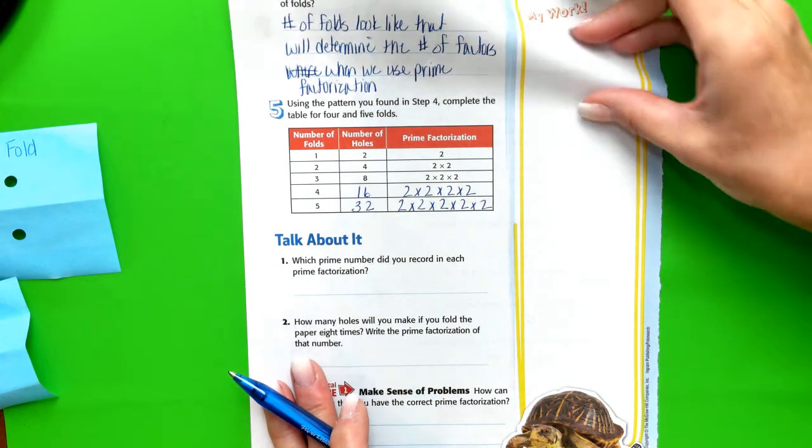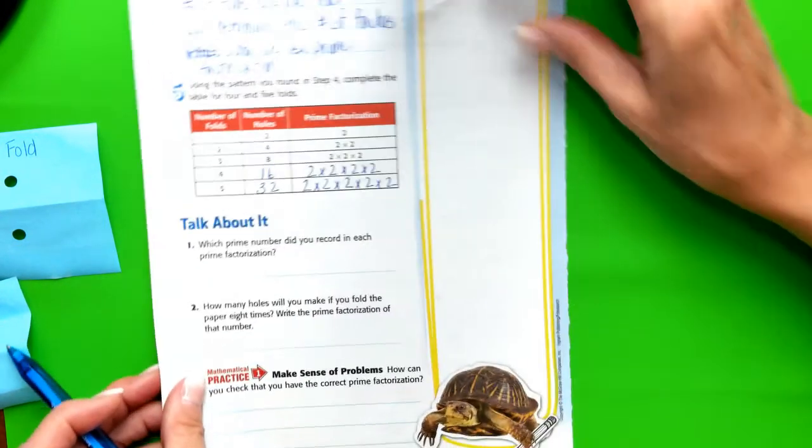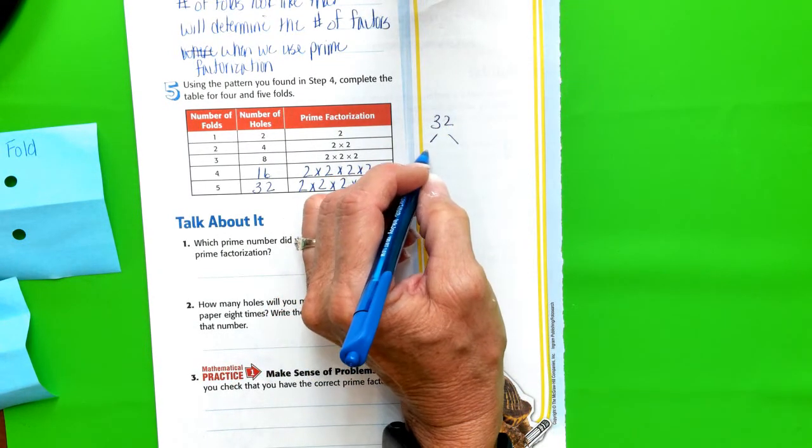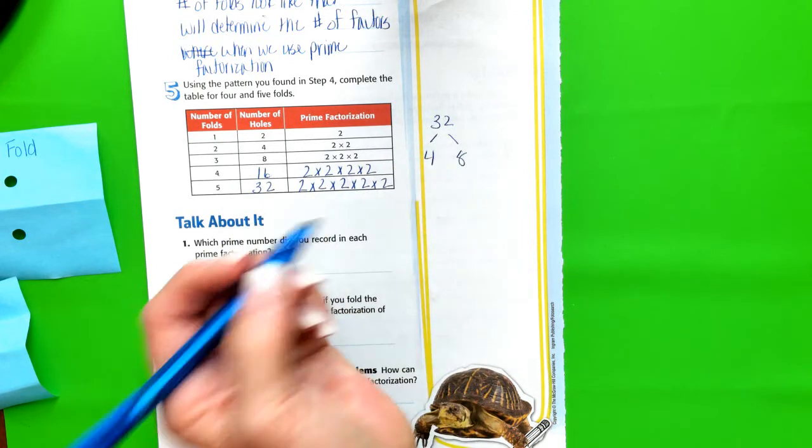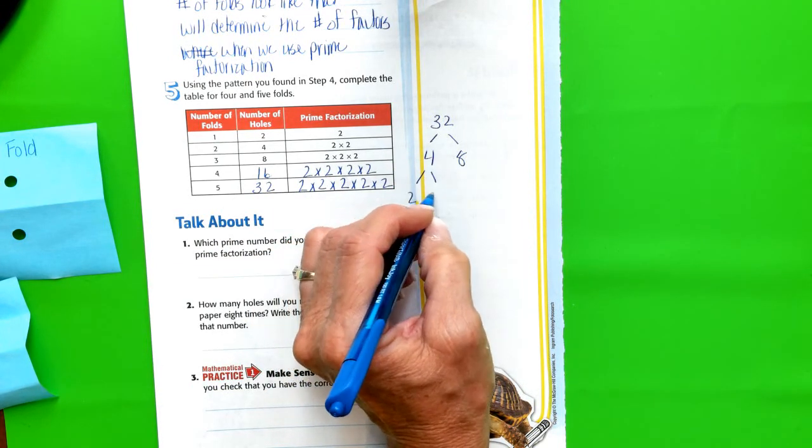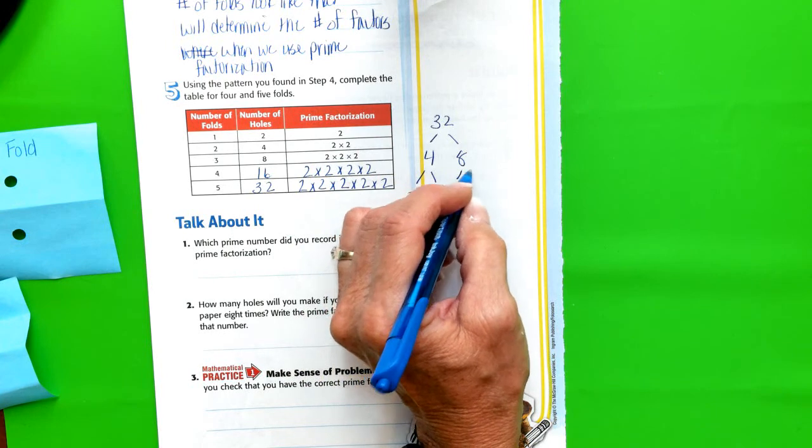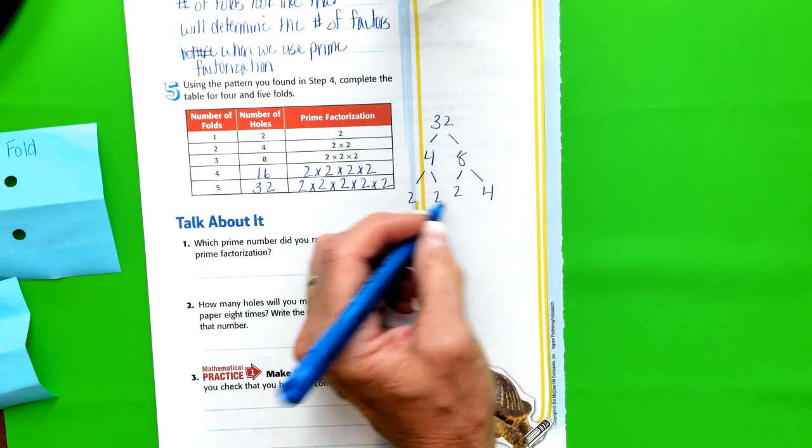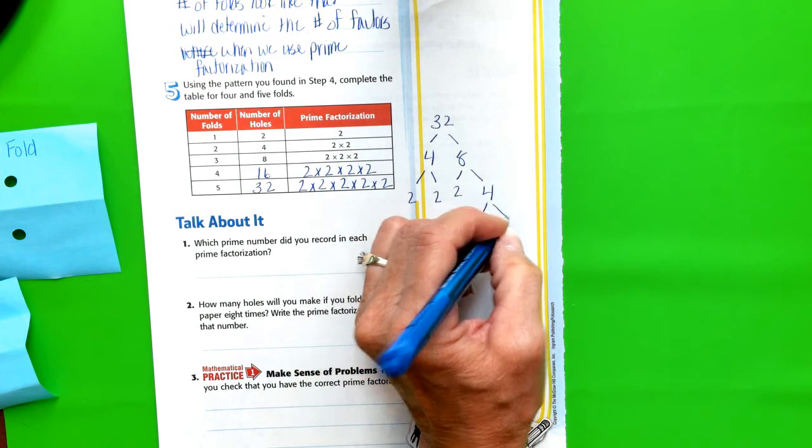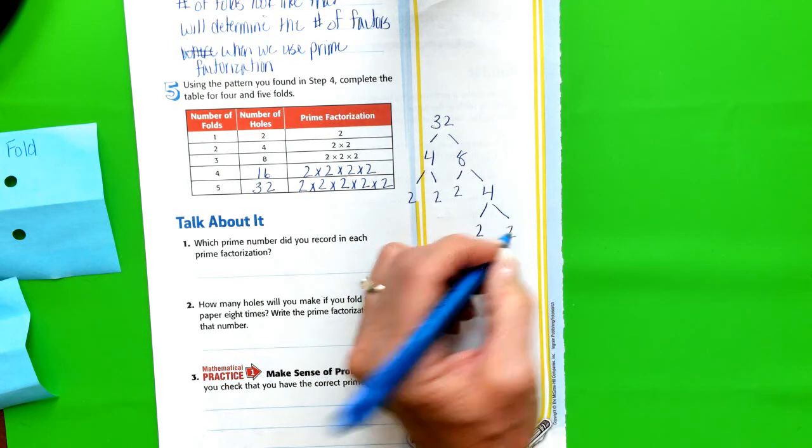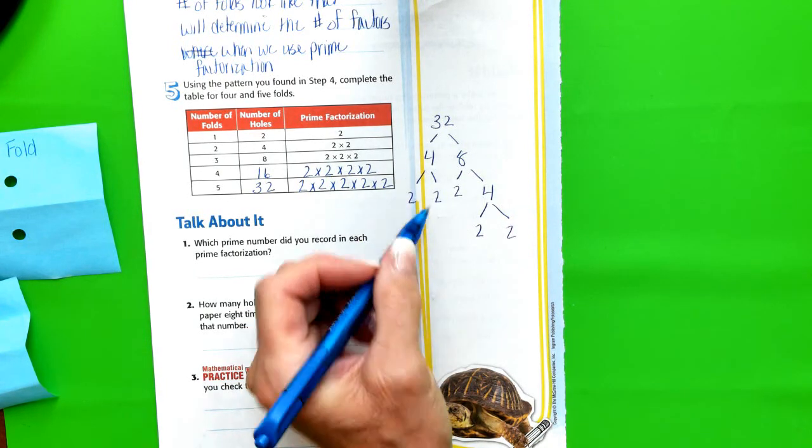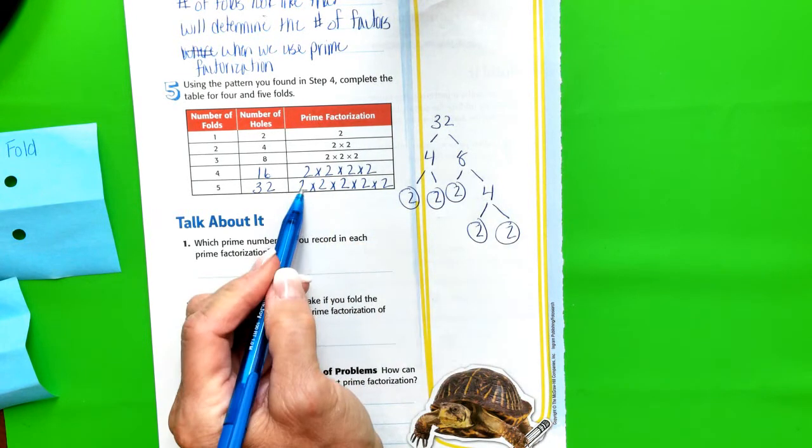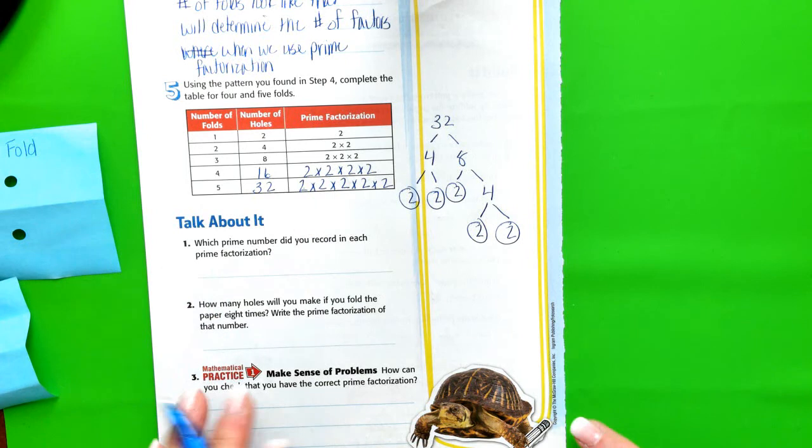I want to factor 32. 32 is four times eight. Sure. Factor four into two and two. I can factor eight into two times four is eight. But then I still have to factor this into two and two. So we have one, two, three, four, five. One, two, three, four, five. Spot on.